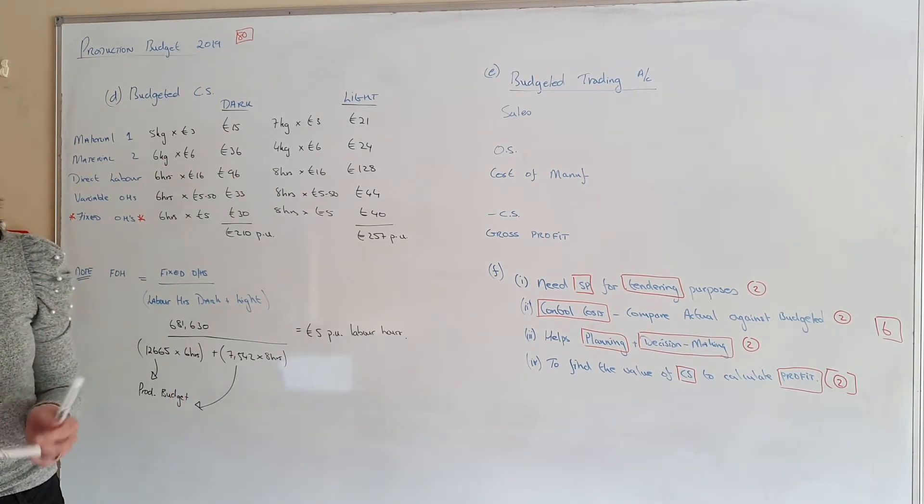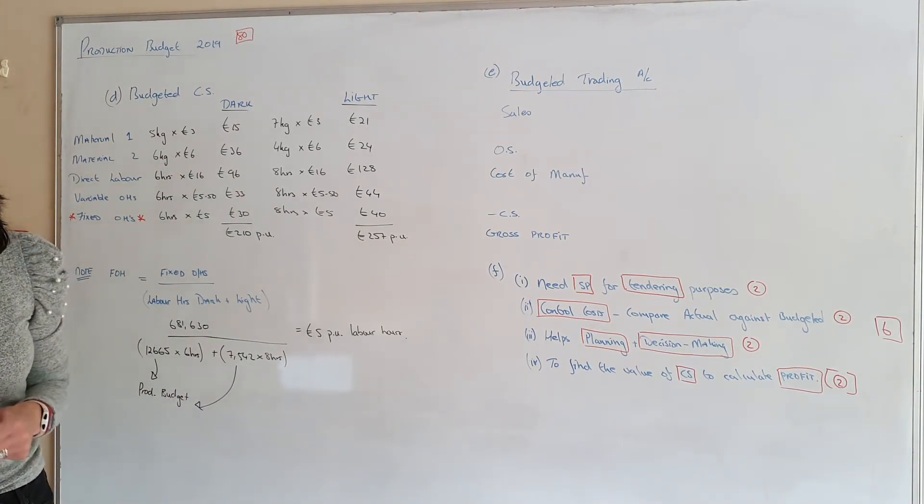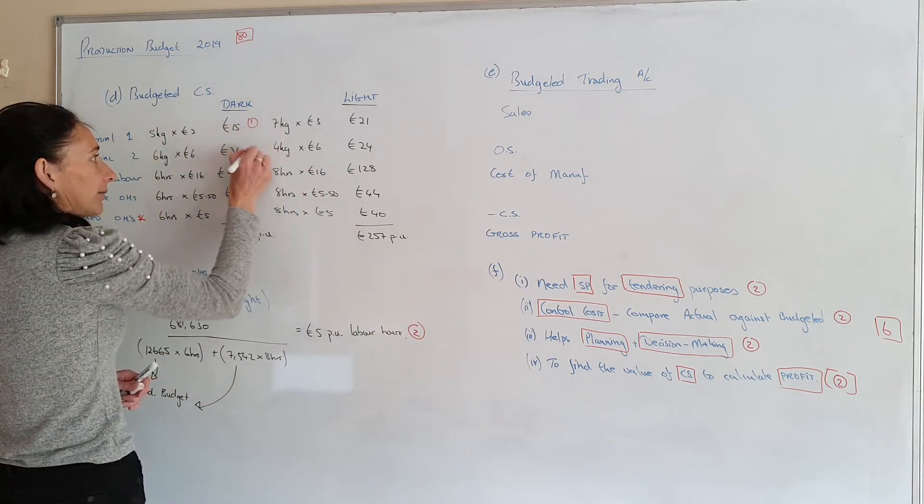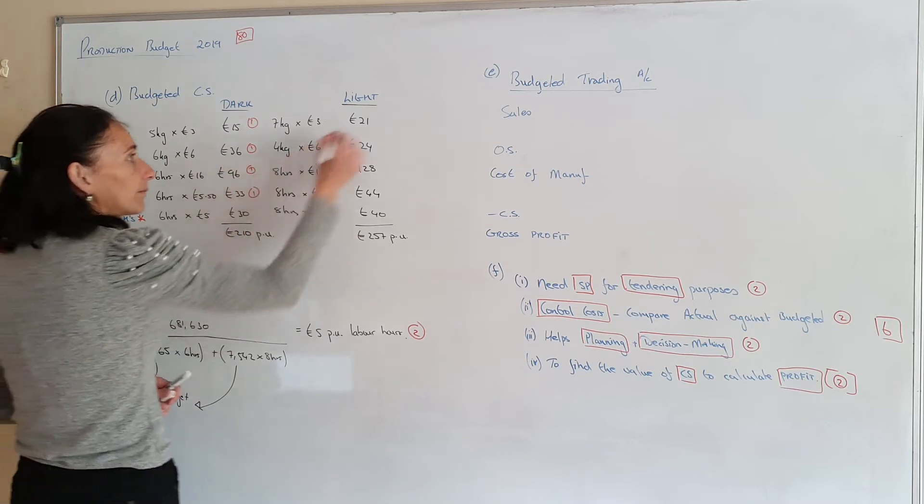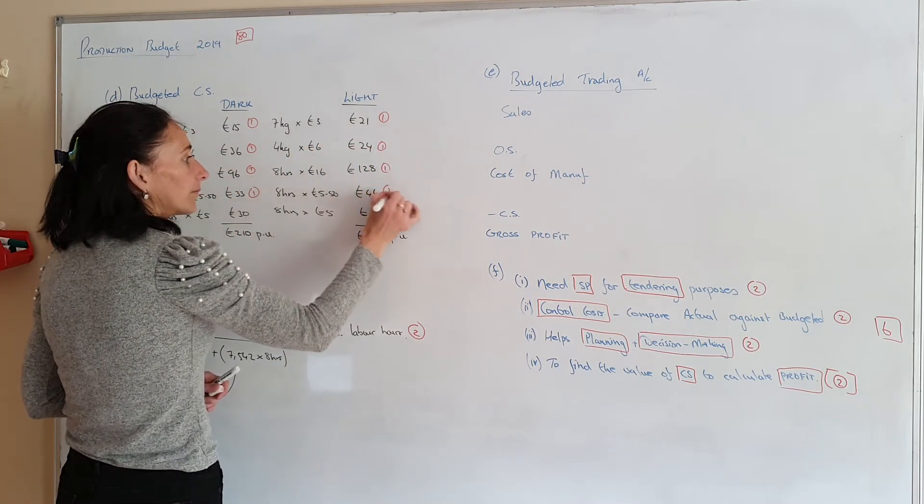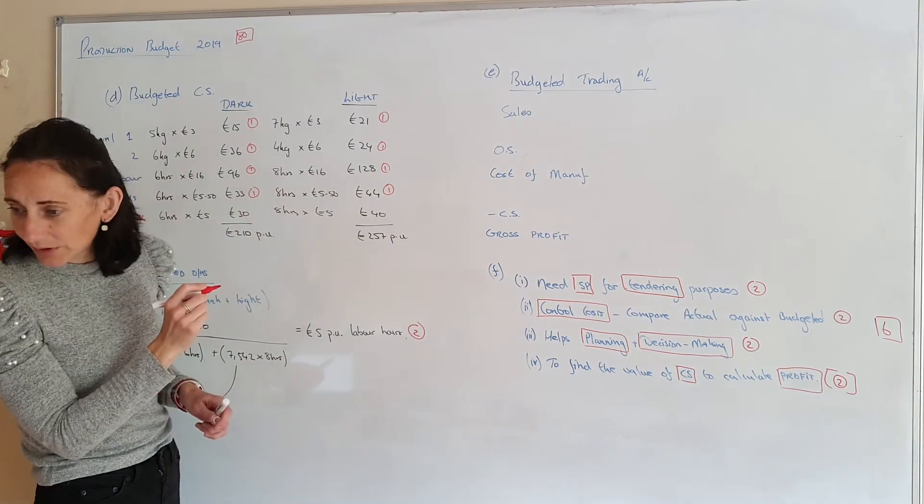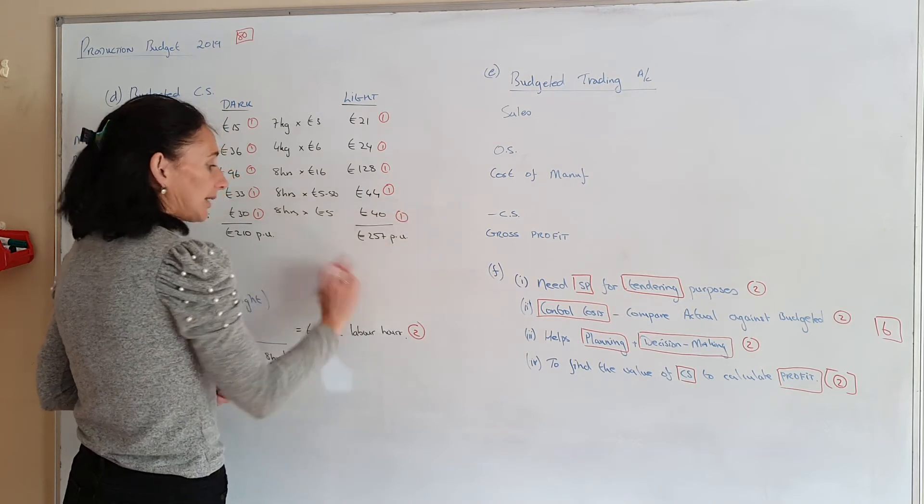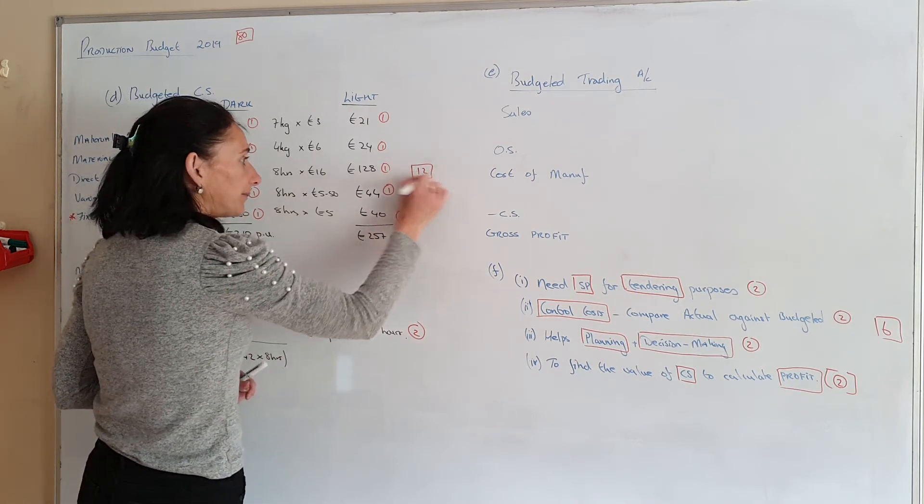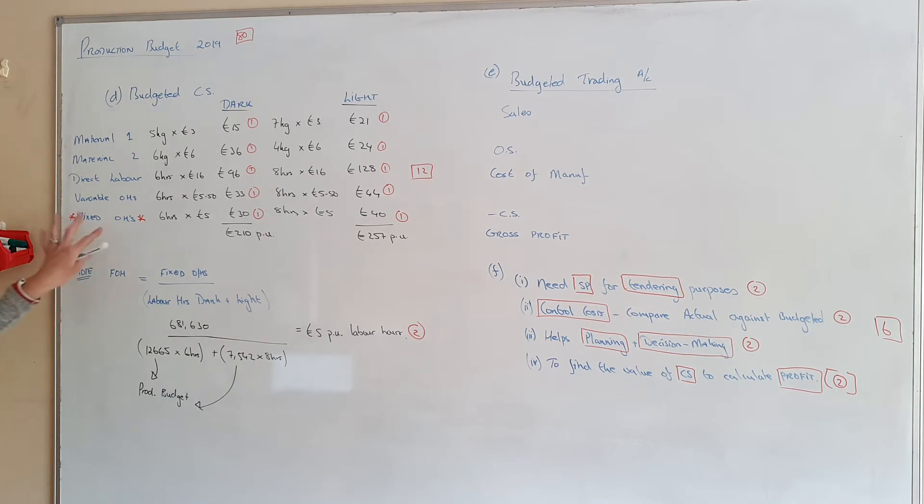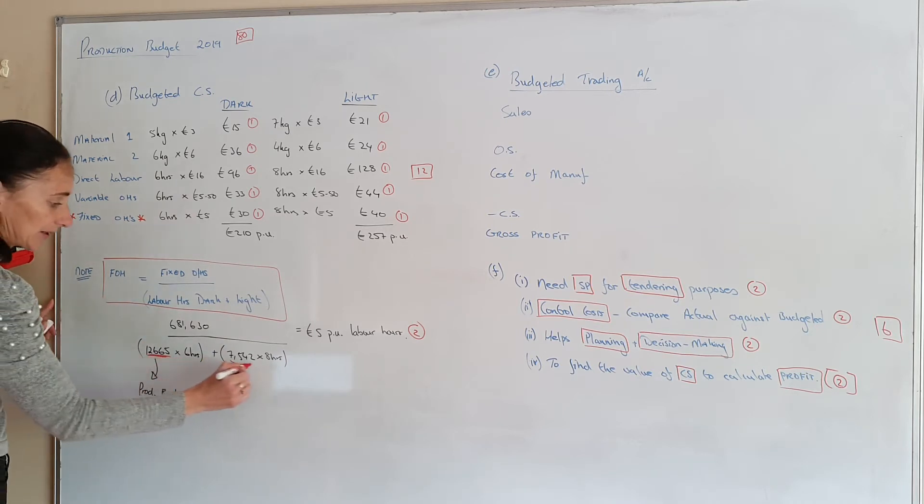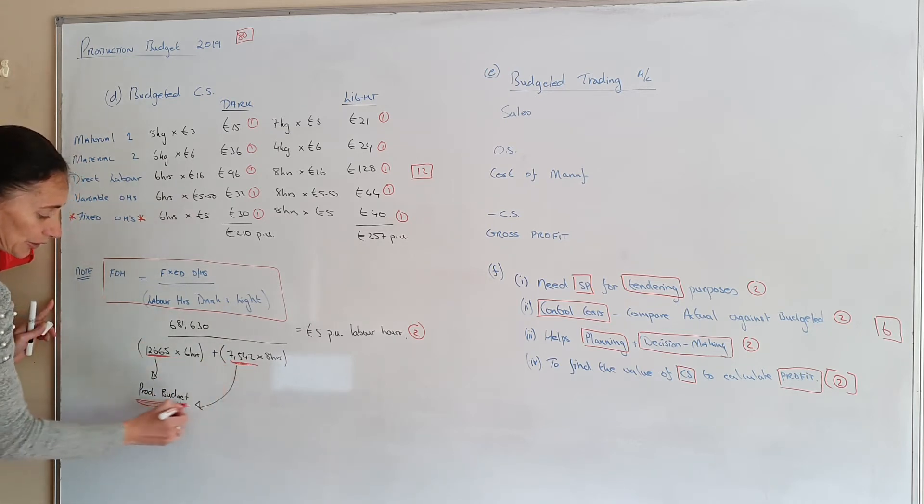For part D they're going to give you 1 mark for each of these. And 2 marks for working this out. So each of these are 1. So that's 10, 2 and 12. The only thing that is difficult here is working out your fixed overheads. And you're going to have to use that format. And just remember this figure here and this figure here comes from your production budget.